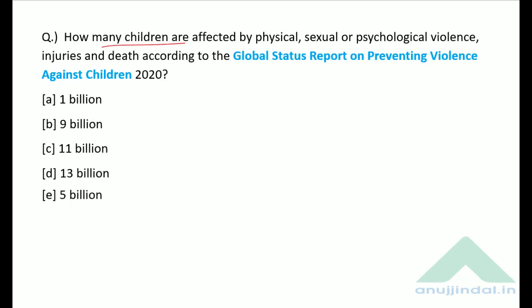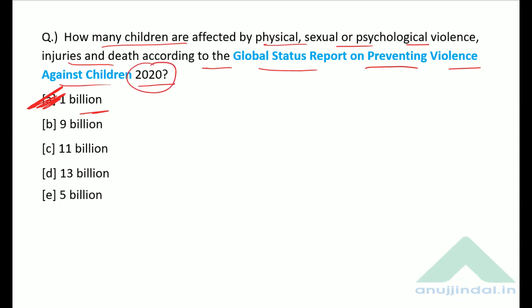How many children are affected by physical, sexual or psychological violence, injuries and death according to the Global Status Report on Preventing Violence Against Children 2020? According to this report, 1 billion children are affected — approximately half of the world's children.